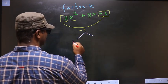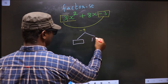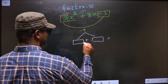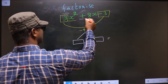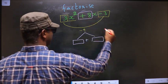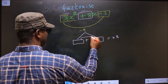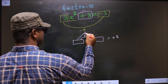You should look out for 2 numbers such that when you add these 2 numbers, you should get the middle coefficient, that is plus 8. And also, when you multiply, you should get minus 9.